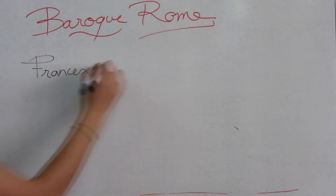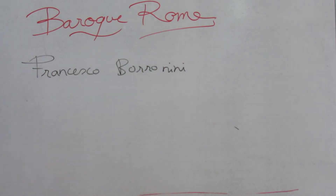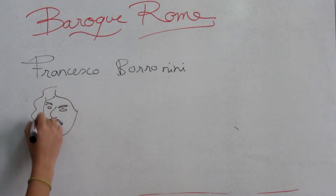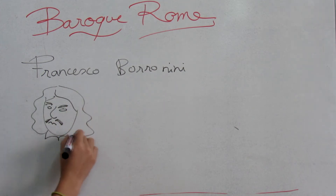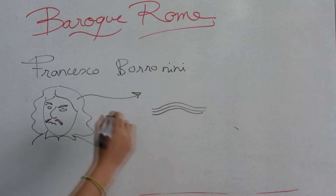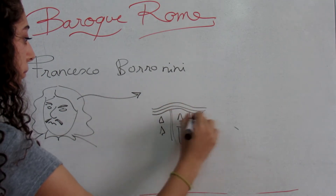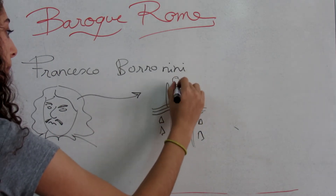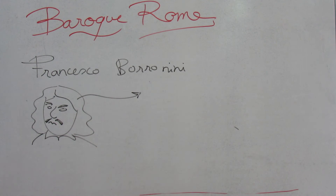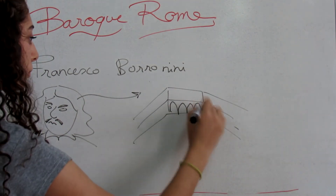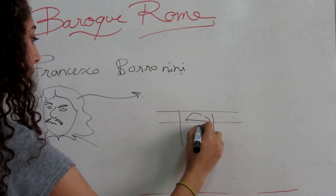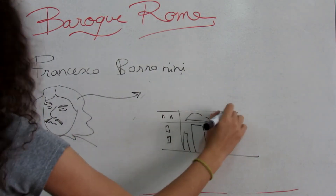Francesco Borromini, with his contemporaries Gian Lorenzo Bernini and Pietro da Cortona, was a leading figure in the emergence of Roman Baroque architecture. A keen student of the architecture of Michelangelo and the ruins of antiquity, Borromini developed an inventive and distinctive geometrical rationale in his plans and symbolic meanings in his buildings. In 1634, Borromini designed his first major independent commission: the church, cloister and monastic building of San Carlo alle Quattro Fontane, situated on the Quirinal Hill in Rome, designed for the Spanish Trinitarians. From 1640 to 1650, he worked on the design of the church of Sant'Ivo alla Sapienza. Borromini was also one of the several architects involved in the building of the Church of Sant'Agnese in Agone, Rome.